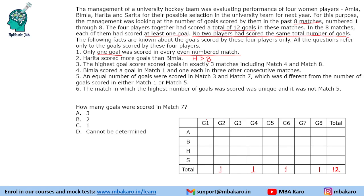The highest goal scorer scored goals in exactly 3 matches, including match 1, match 4 and match 8. In match 4 and match 8, only 1 goal is scored each, so the player scores 1 goal in both these matches and some more goals in another match. Bimla scored a goal in match 1 and 1 each in 3 other consecutive matches, meaning Bimla scored a total of 4 goals — 1 in match 1 and 3 other consecutive matches.